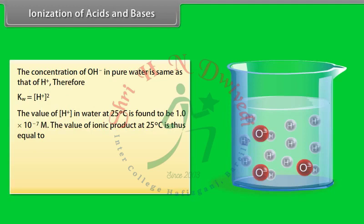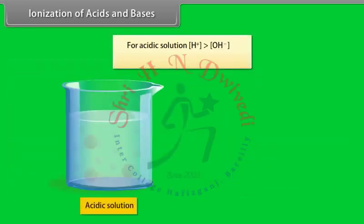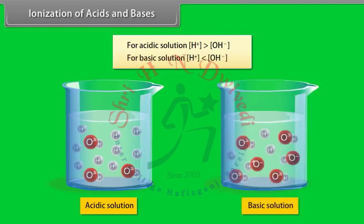The value of [H⁺] in pure water at 25°C is 1.0 × 10⁻⁷ M. The value of the ionic product Kw at 25°C is thus 10⁻¹⁴ M². For a neutral solution, [H⁺] = [OH⁻] = √Kw. For an acidic solution, [H⁺] > [OH⁻]. For a basic solution, [H⁺] < [OH⁻].